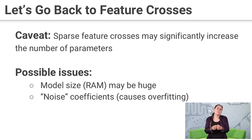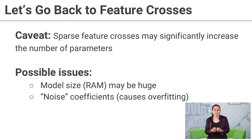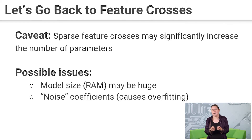All of that means that our model size is going to explode, taking memory and possibly slowing down runtime. And a lot of those combinations are going to be super rare, even if we have a lot of training data. So we may just end up with some noisy coefficients and possibly overfitting.